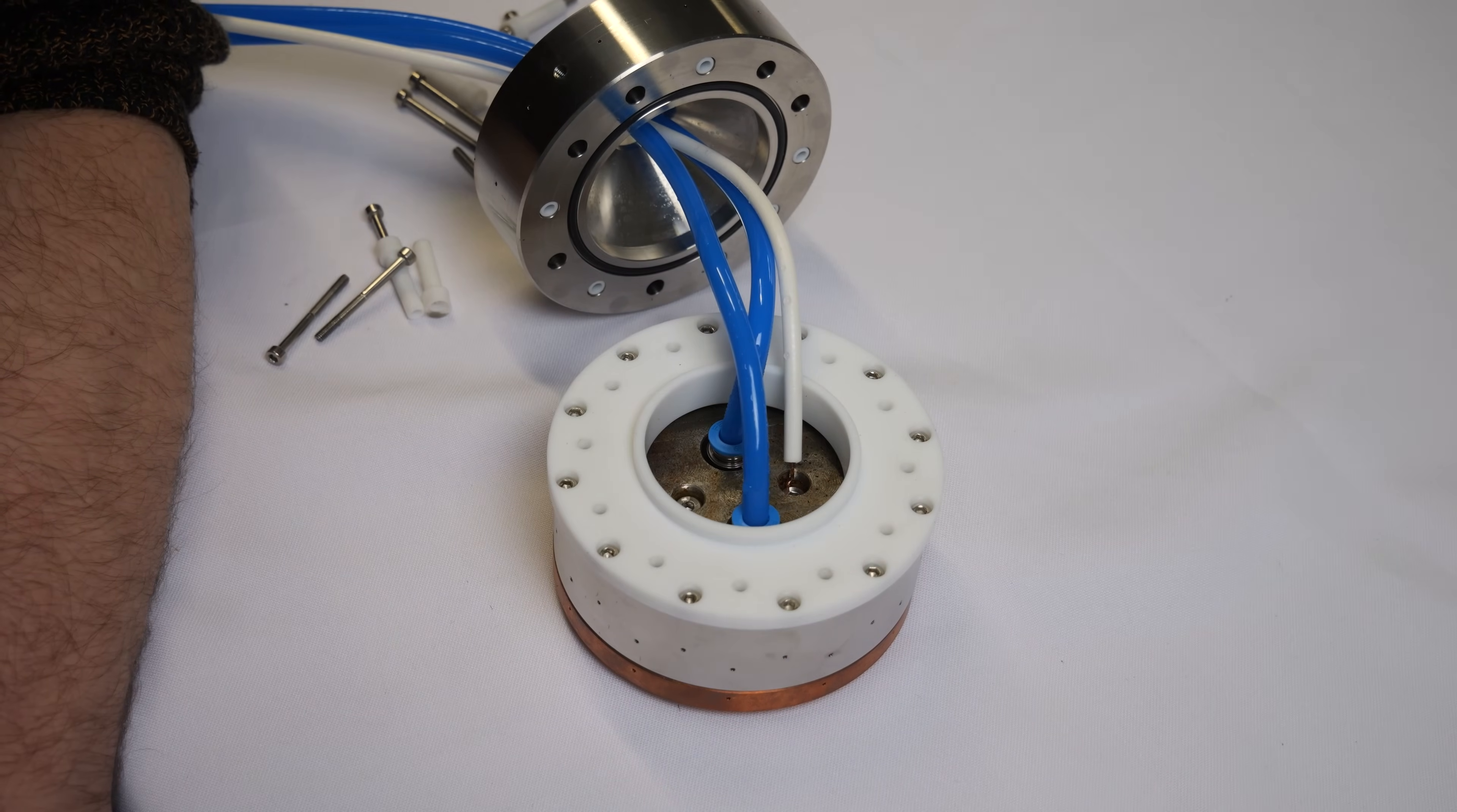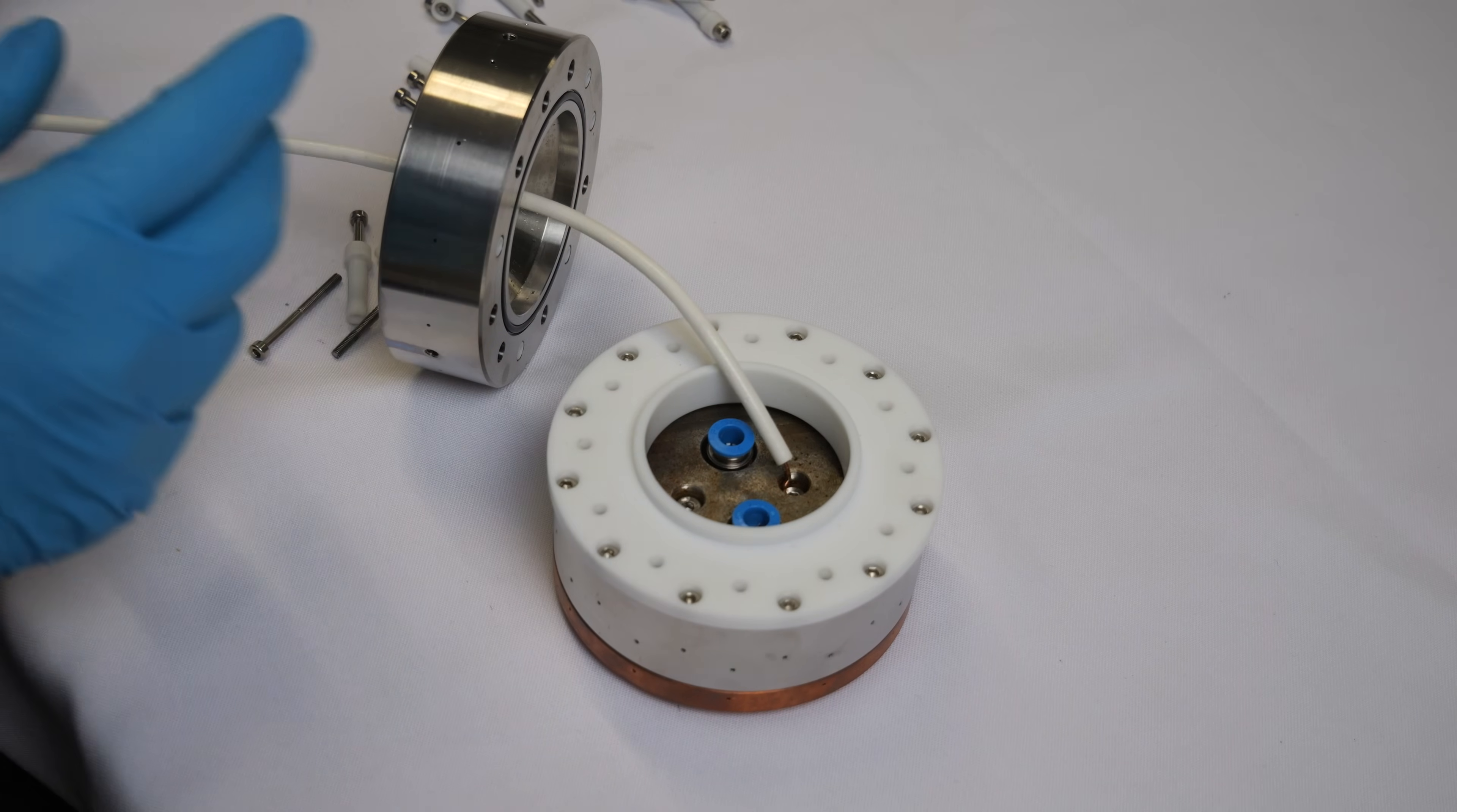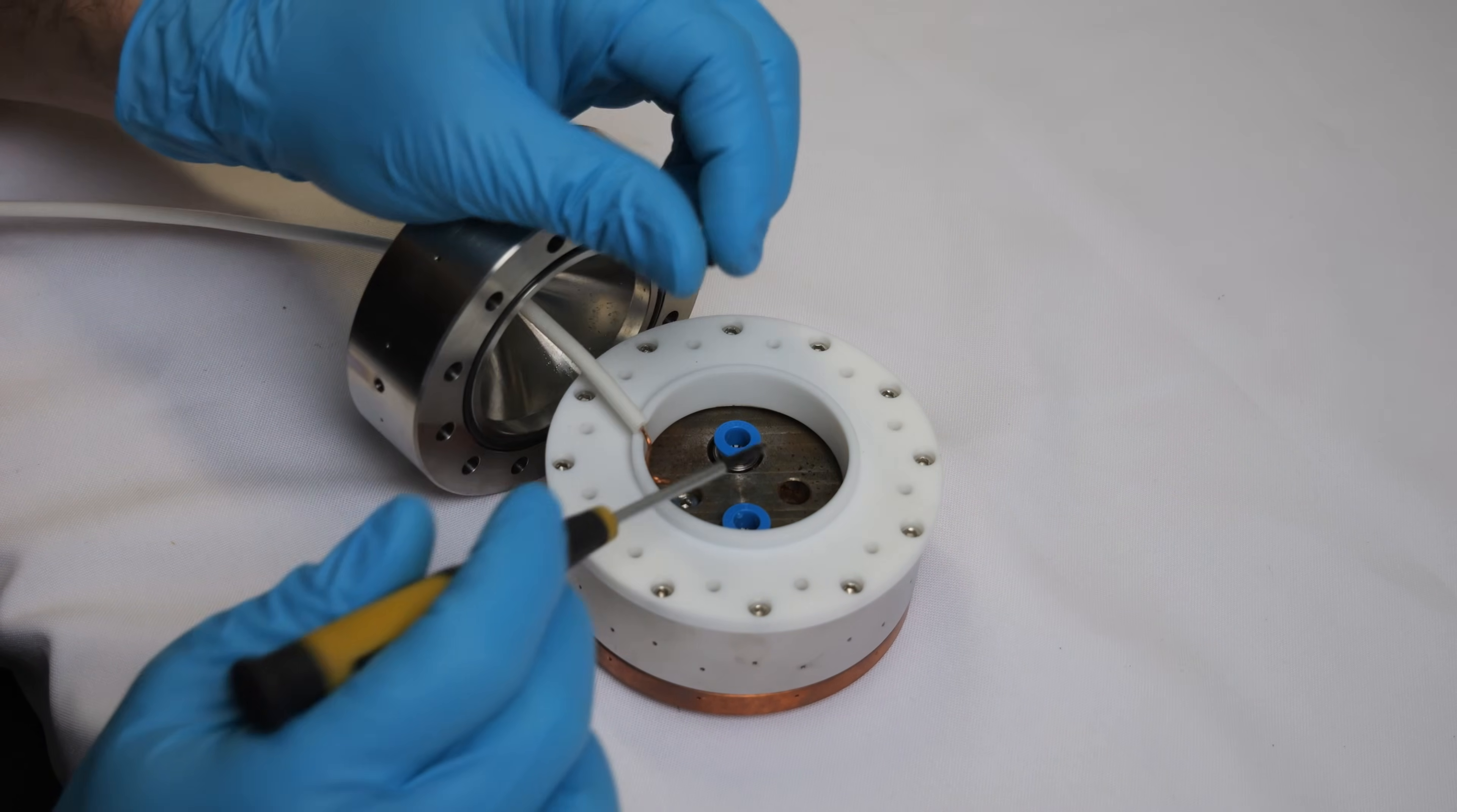To make it easier for us to work on this magnetron I will now remove the cooling water tubes and also the high voltage cable. The high voltage cable was just bent into a hook and then screwed down to the copper plate.